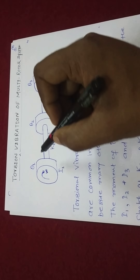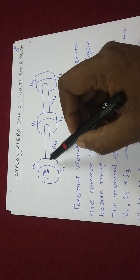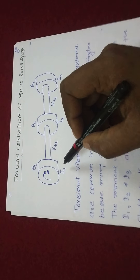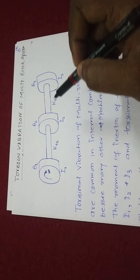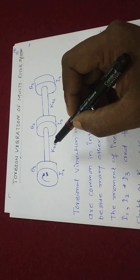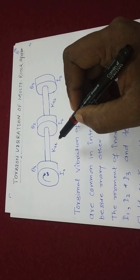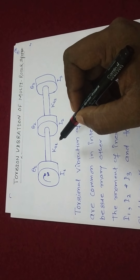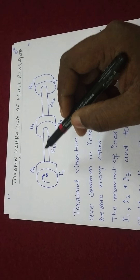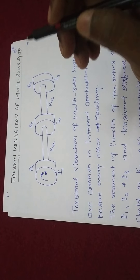The given multirotor system consists of rotor 1, rotor 2, and rotor 3, having inertia I1, I2, and I3, connected with shaft 1 and shaft 2, having torsional stiffness KT1 and KT2. The angular displacements are given as theta 1, theta 2, and theta 3.